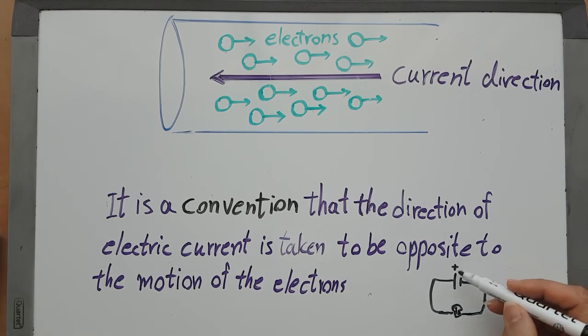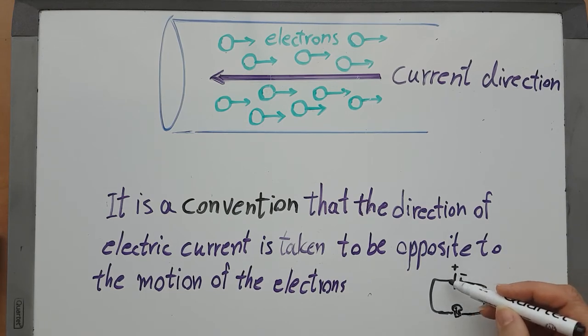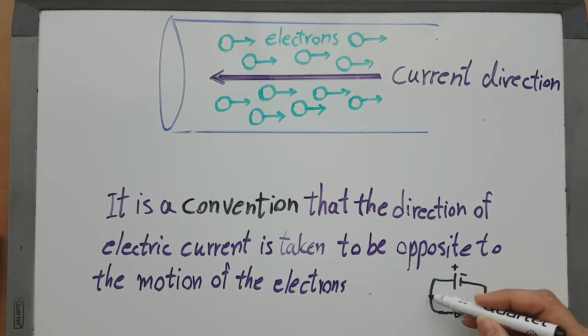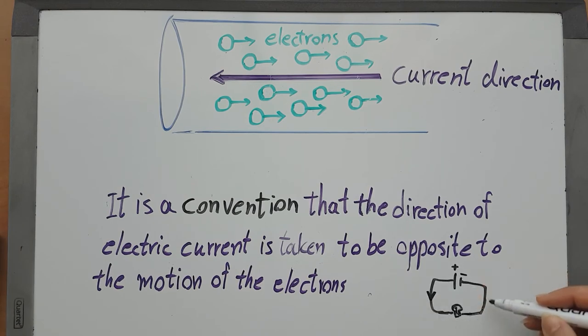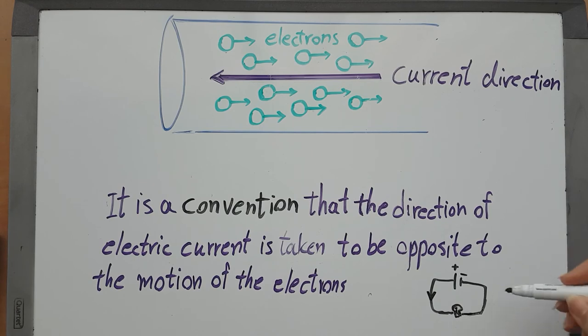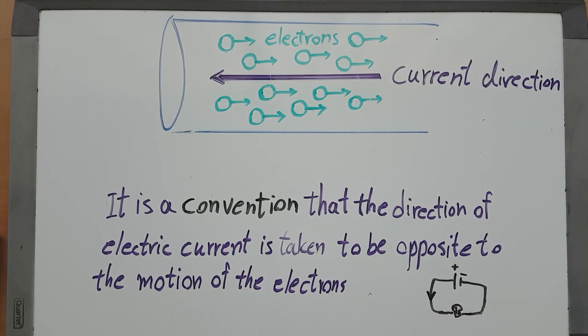The current is from positive to negative, even though the movement of the electrons is actually this way.